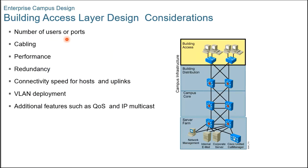Building access layer design considerations: when implementing the campus infrastructure's building access layer, you have to consider the following questions. How many users or host ports are currently required in the wiring closet, and how many will be required in the future? Should the switches be fixed or modular configuration? How many ports are available for end-user connectivity at the walls of the building? How many access switches are not located in the wiring closets? What cabling is currently available in the wiring closet, and what cabling options exist for uplink connectivity?